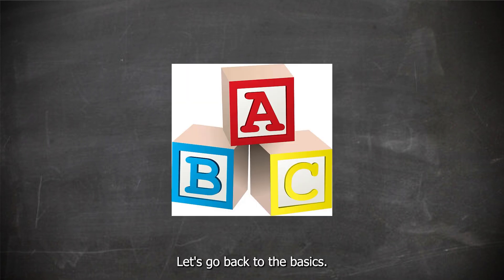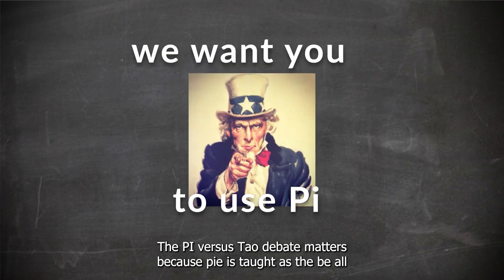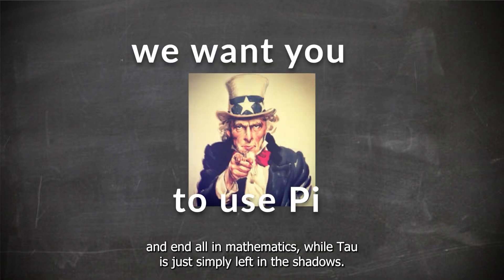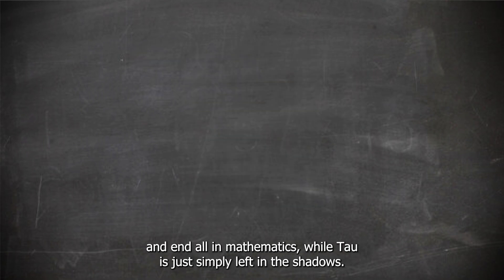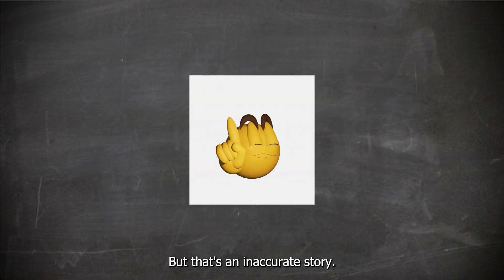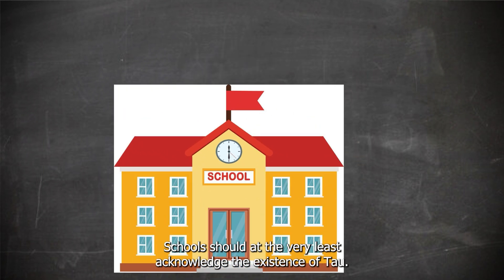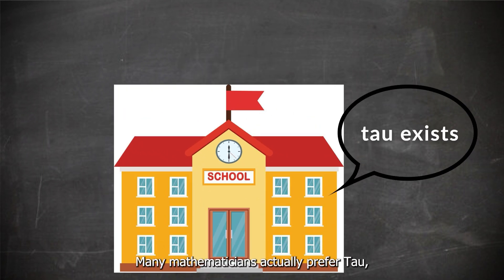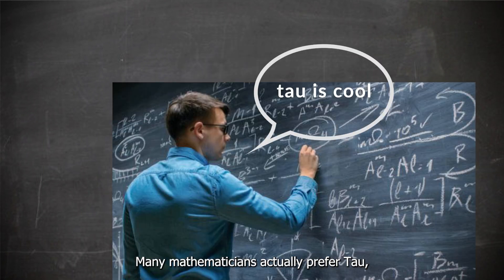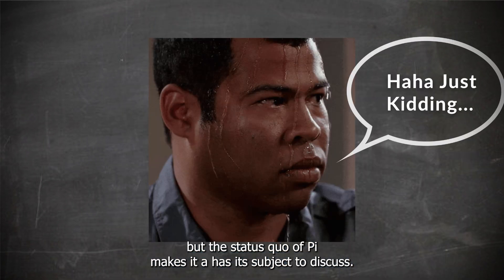Let's go back to the basics. The pi versus Tau debate matters, because pi is taught as the be-all and end-all in mathematics, while Tau is simply left in the shadows. You've probably been told pi is the only correct way to do these formulas, but that's an inaccurate story. Schools should, at the very least, acknowledge the existence of Tau. Many mathematicians actually prefer Tau, but the status quo of pi makes it a hesitant subject to discuss.